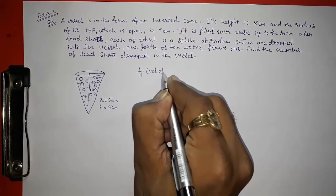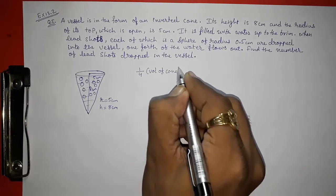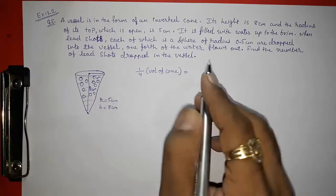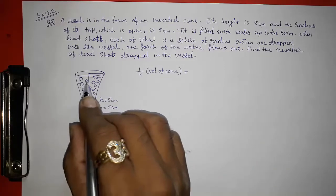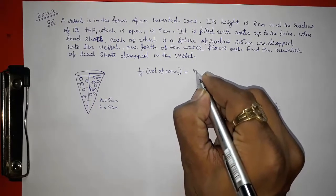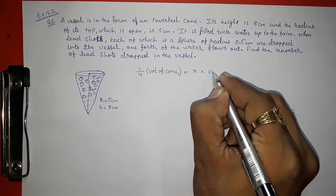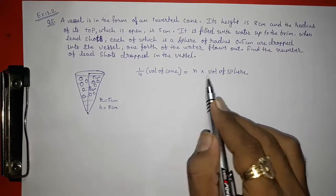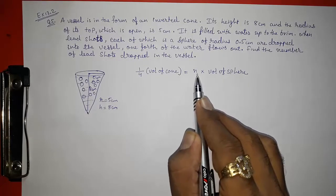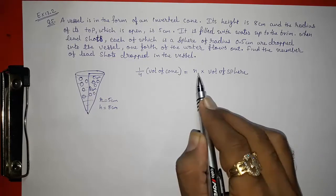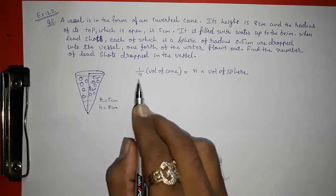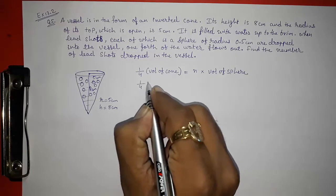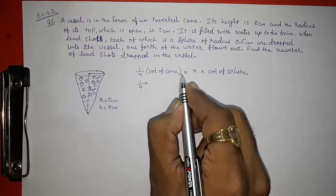So one-fourth of the volume of the cone will be equal to the volume of the spheres. Since there are many balls, not just one, we write: n (number of balls) multiplied by the volume of one sphere equals one-fourth of the volume of the cone.